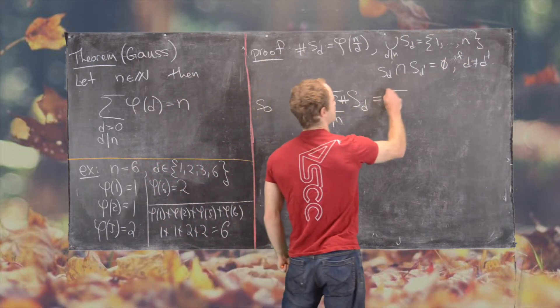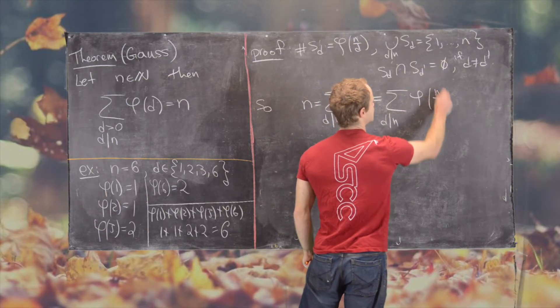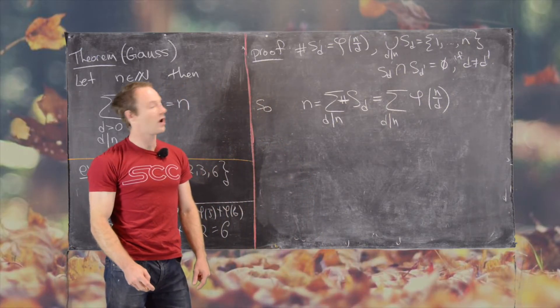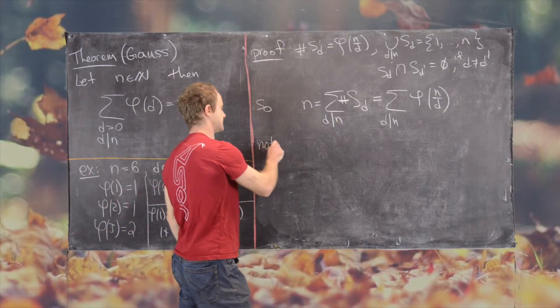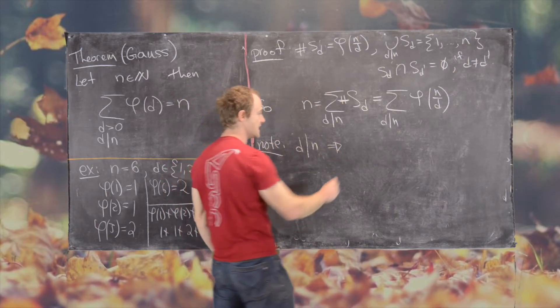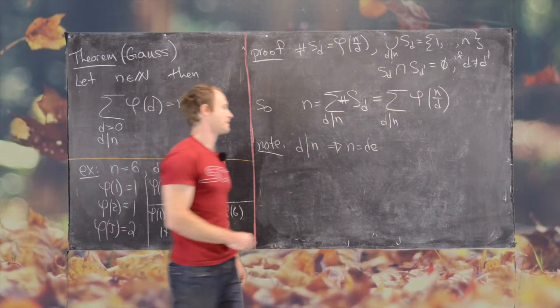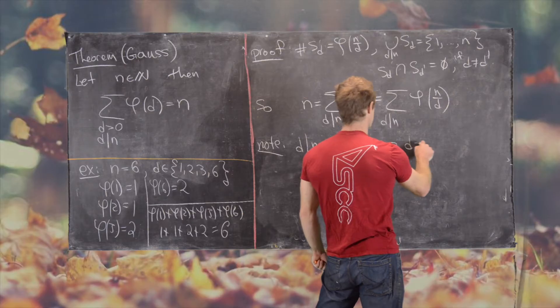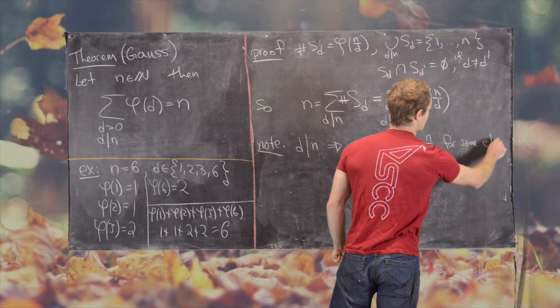So now from here, we can say that this is equal to the sum over all divisors of n of phi of n over D. And now we're almost there, and we can finish this off by the following. So now let's notice, if D divides n, that means that n equals D times E for some natural number. But that means that D equals n over E for some E that divides n.